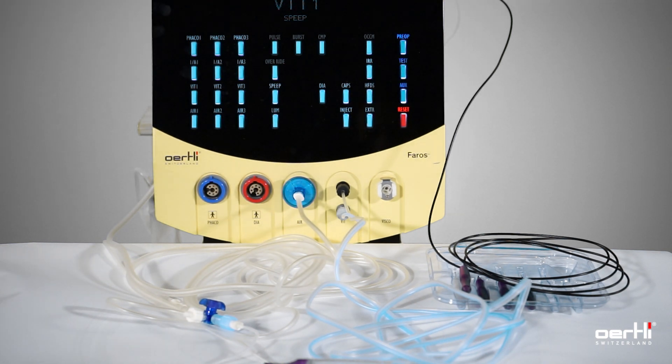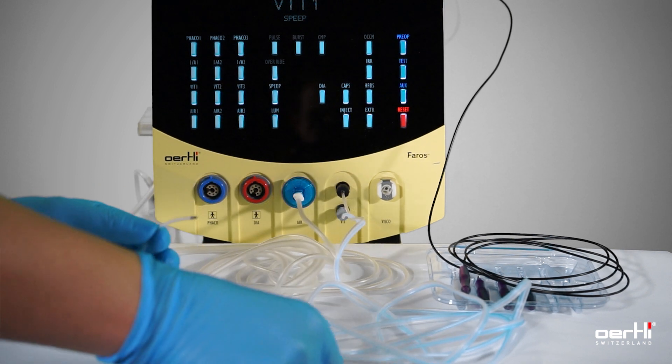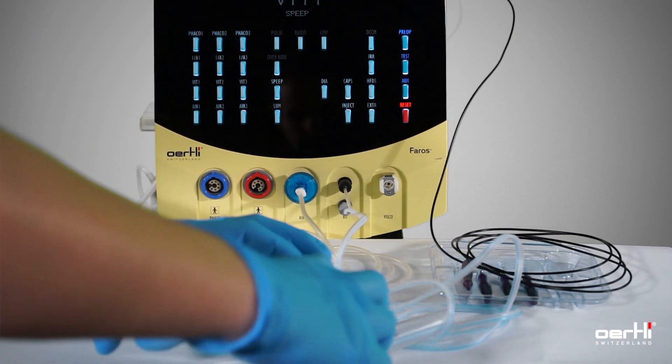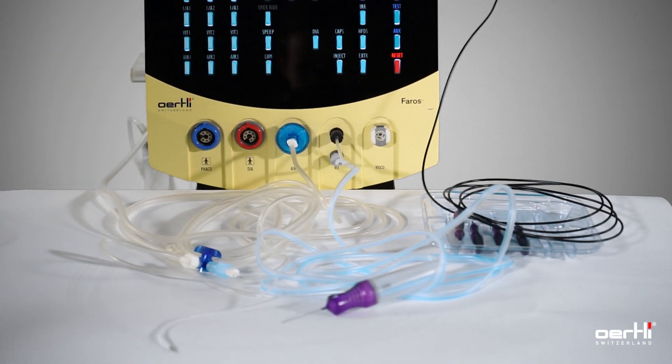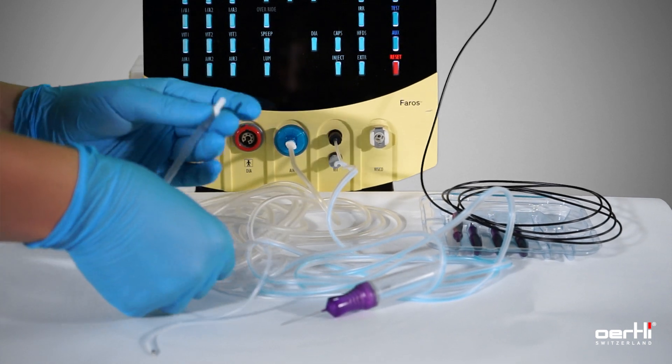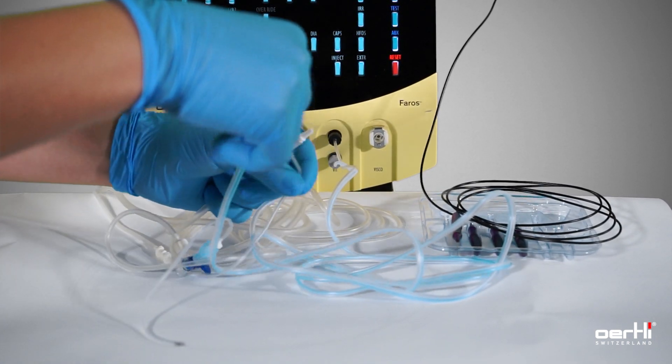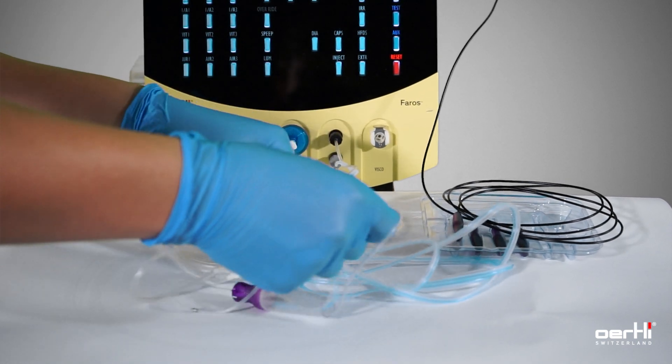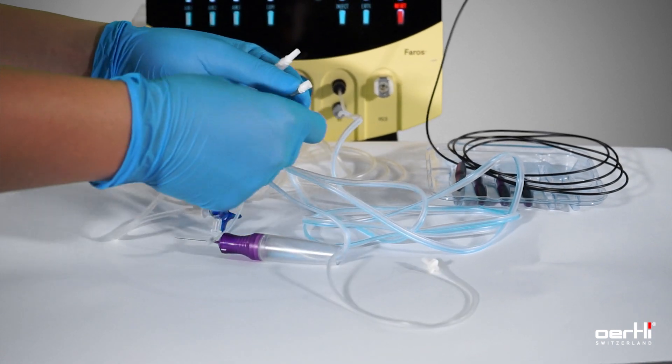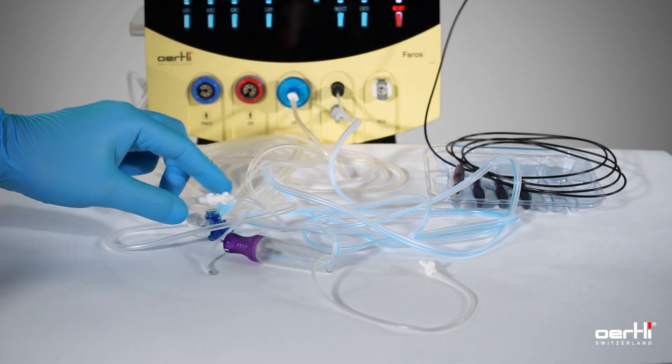For the pre-op, you have two options. Either you use the infusion line and the cutter directly inside of a small bin or whatsoever you have available on the table, or you connect the irrigation line and the aspiration line directly and perform the pre-op in that condition.